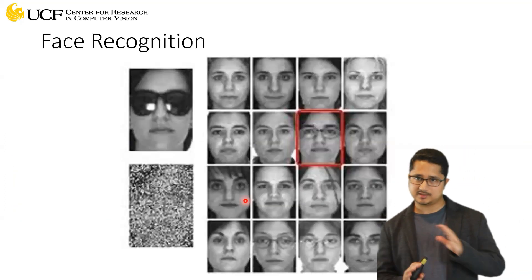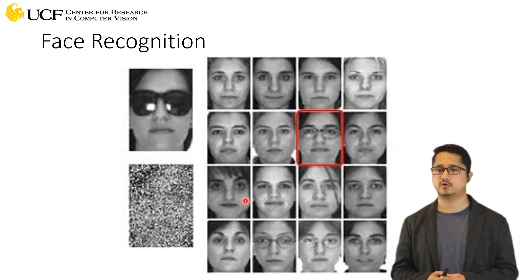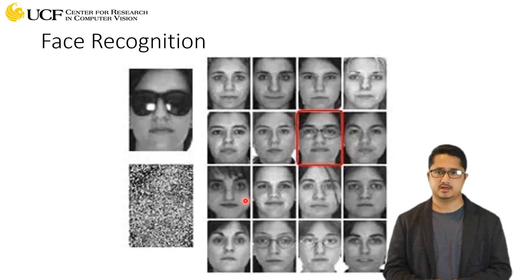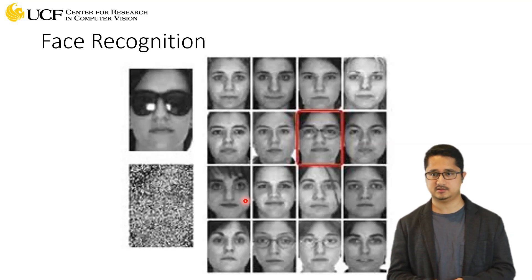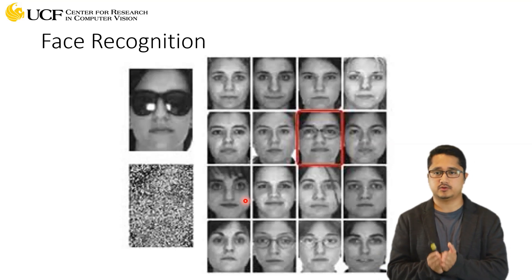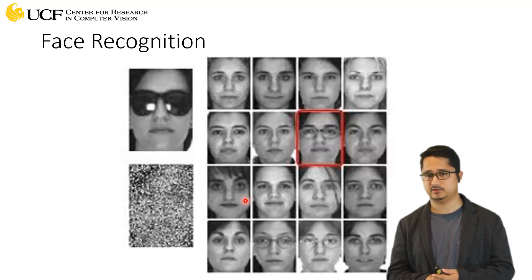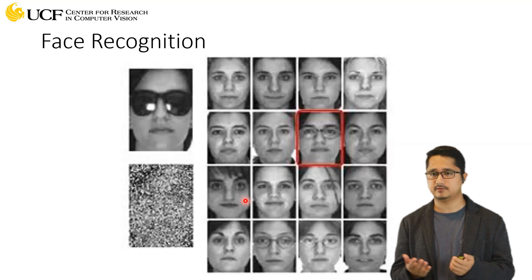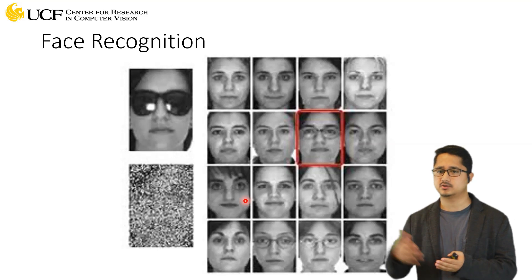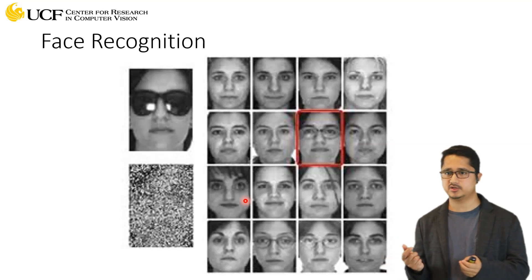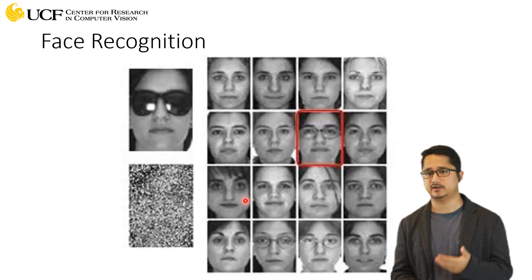Those are some classical problems in computer vision. Let's talk about some other problems that relate to those fundamentals but are actually different — for example, face recognition. You have an image of a person and you have to identify which individual that is. Even though this is face recognition, it correlates directly to the first problem we discussed: object classification. The only difference is that all images are faces — the object category isn't changing, but the identity of the individual is. The basic problem still remains recognition or classification.